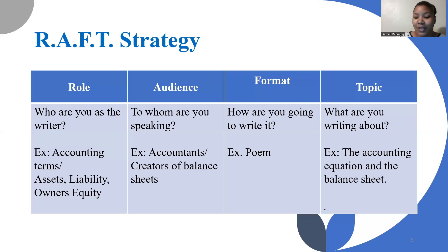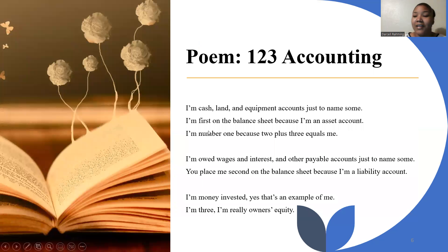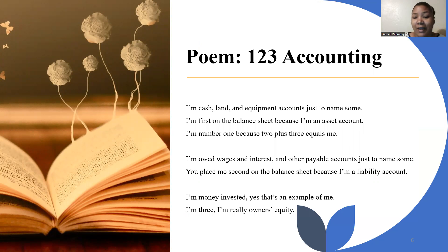Here's an example. I named my poem "123 Accounting." So it goes: I'm cash, land and equipment accounts, just to name some. I'm first on the balance sheet because I'm an asset account.